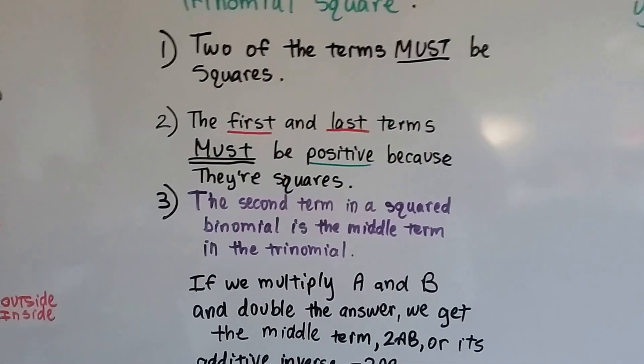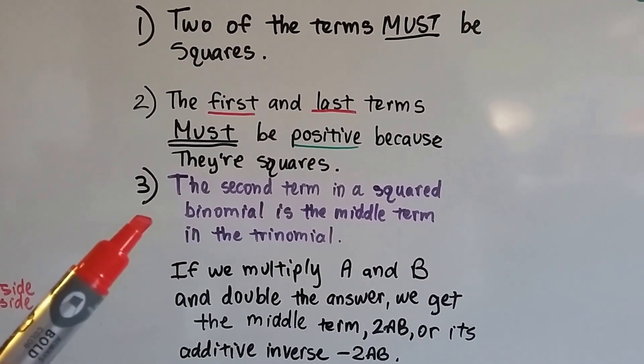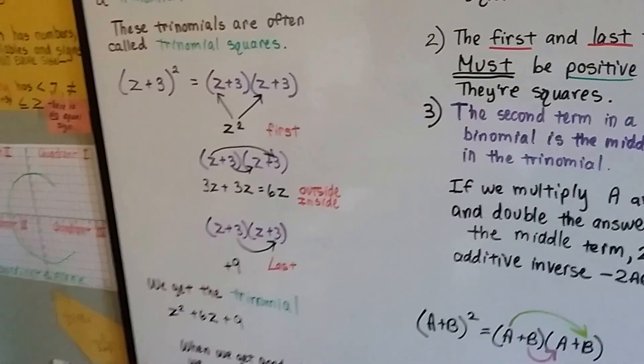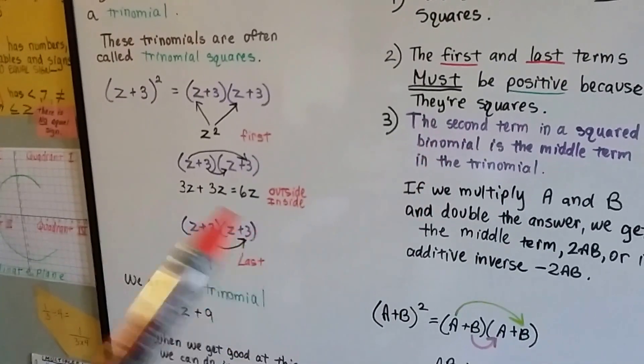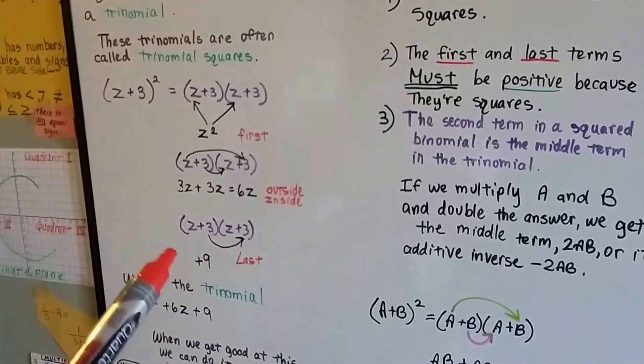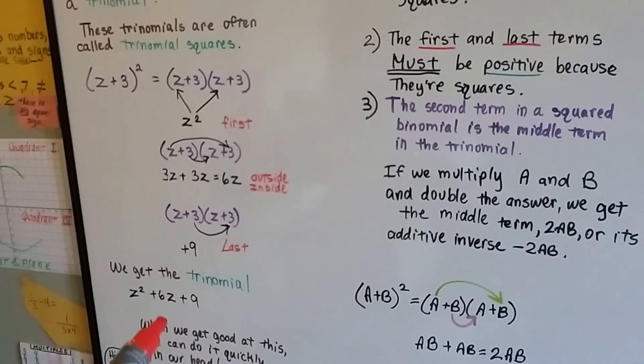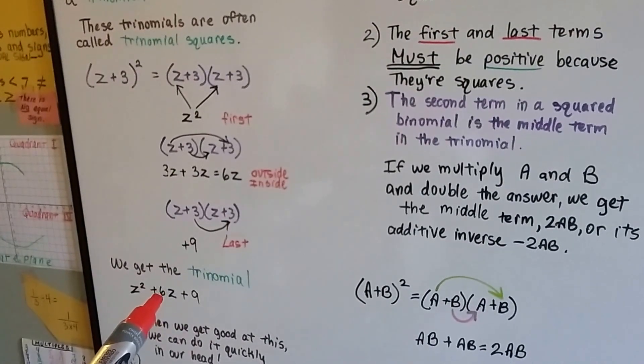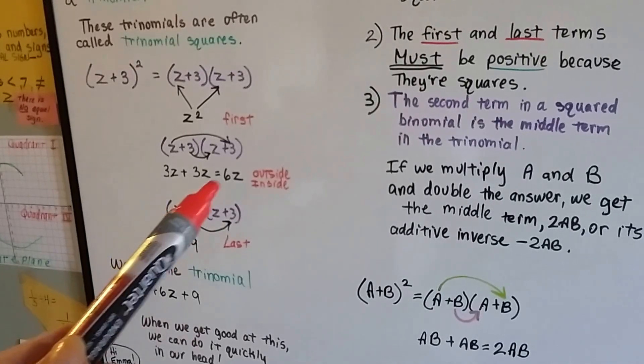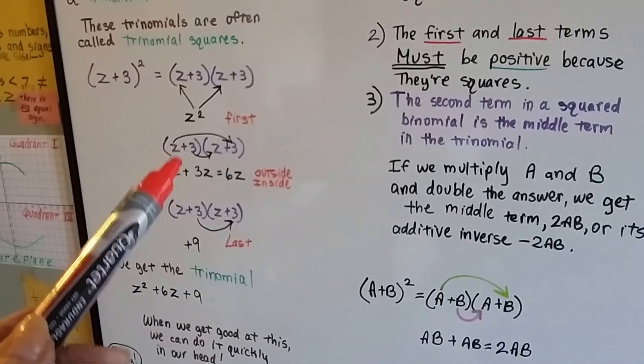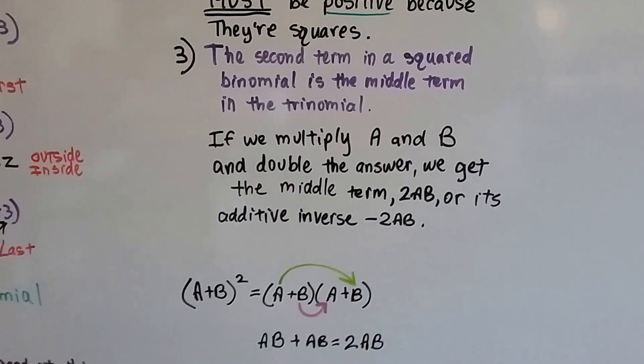The first and last terms must be positive because they're squares. And the second term in a squared binomial is the middle term in the trinomial. It's 3z plus 3z.